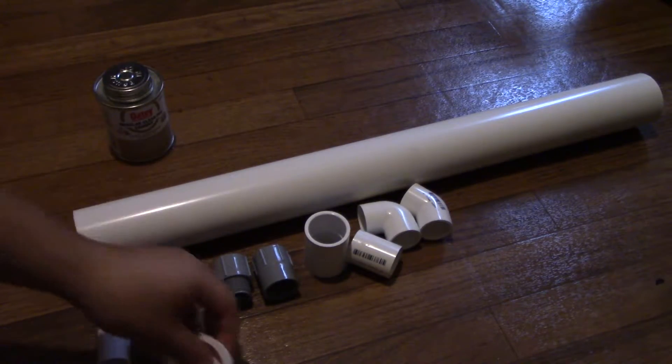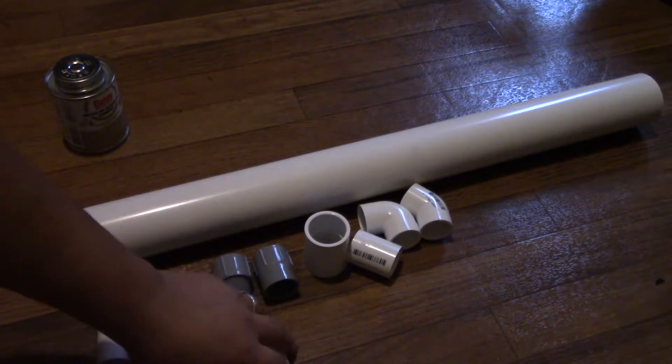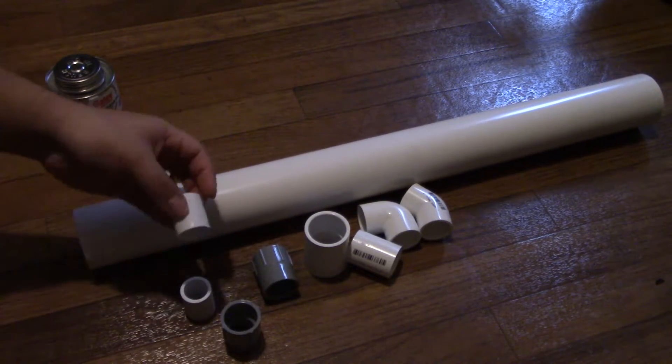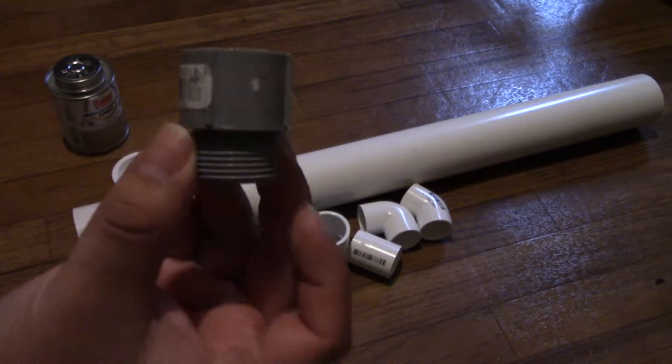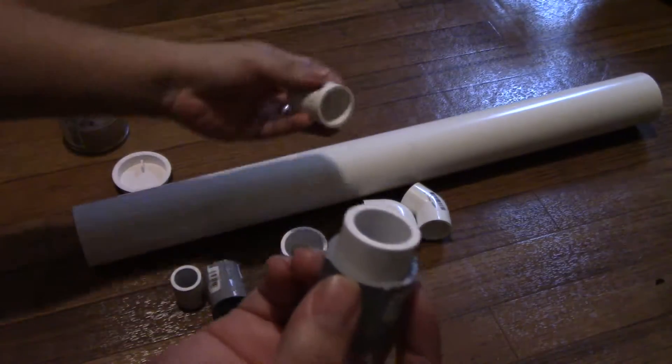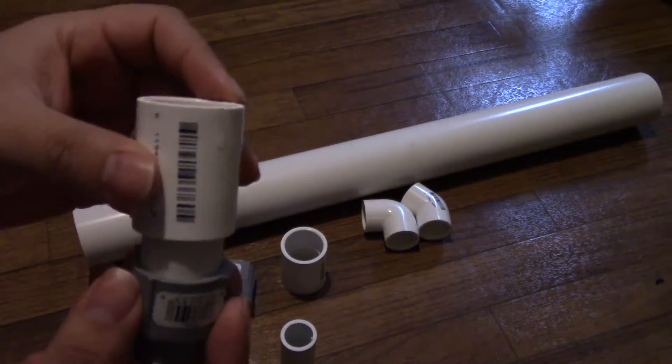So first to construct the standpipe, you take the male piece of the electrical, you put your three-quarter inch PVC in there, and then you put your coupling, your three-quarter coupling.